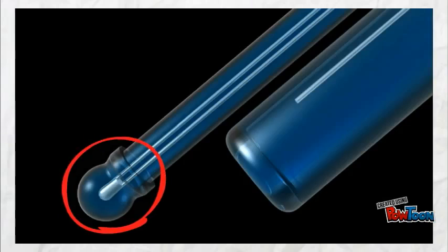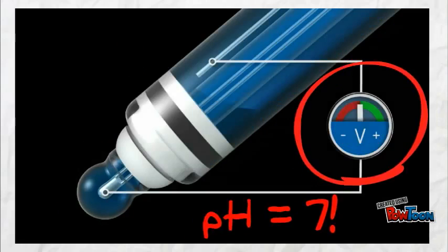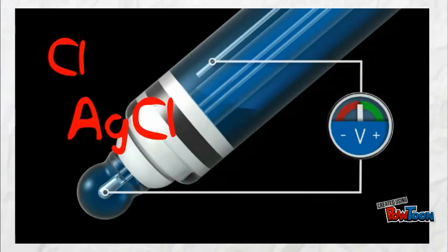The measuring electrode has a bulb fused to it. It contains a silver chloride wire and is filled with a buffer solution which has a neutral pH. The buffer solution is usually potassium chloride or silver chloride.